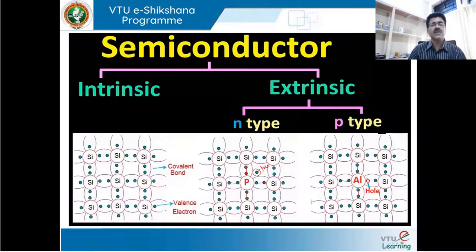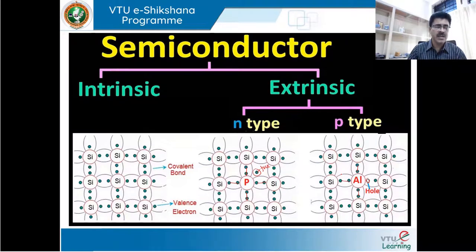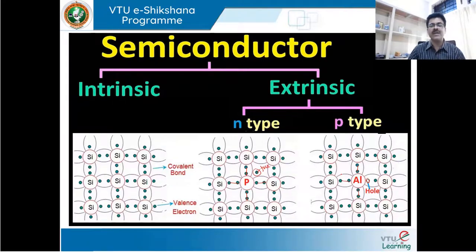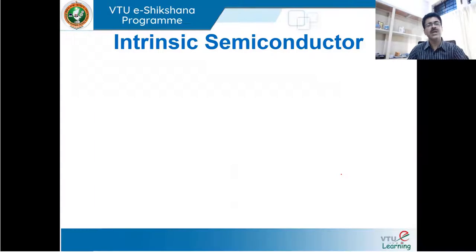This is how semiconductor materials are divided into intrinsic and extrinsic — where intrinsic is in its purest state, and extrinsic has impurities added. In the extrinsic case, it is further divided into n-type and p-type semiconductor based on whether a pentavalent or trivalent element is doped.